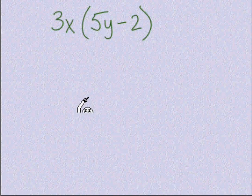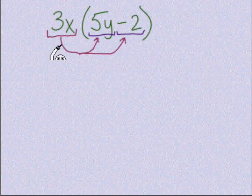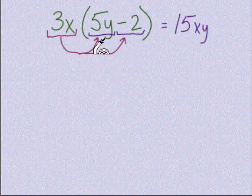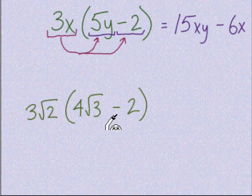Let's check out this example. We are multiplying one term by two terms, which means we want to use distributive property. We multiply 3x times 5y — multiply the coefficients 3 times 5 and then combine the variables. Then the second multiplication: 3x times negative 2. Always be cautious with signs — that gives us negative 6x. We multiplied the number parts and then looked at whether we have variables to combine.